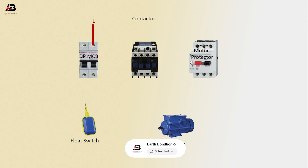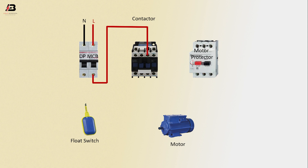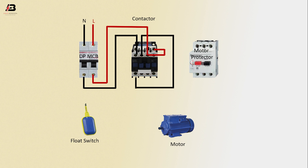Phase connection input to DPMCB, neutral connection input to DPMCB. Output phase connection from DPMCB to connect contactor — another connection into contactor another point. Output neutral connection from DPMCB to connect contactor, and output neutral connection from contactor to contactor another point.